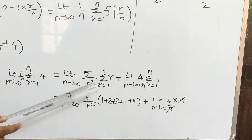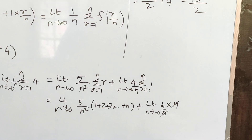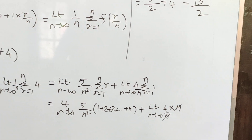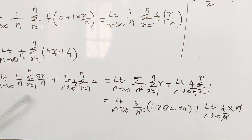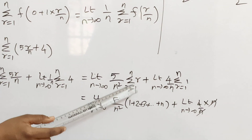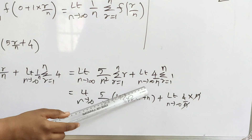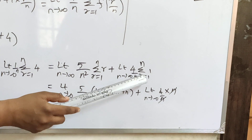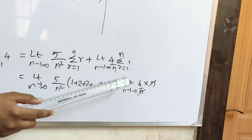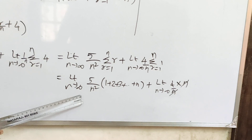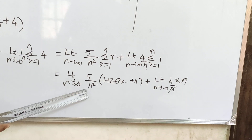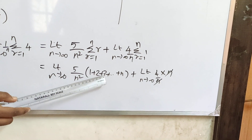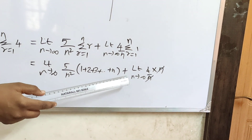Then limit n tends to infinity, taking 5 by n outside: 5 by n squared, summation r equal to 1 to n of r. Plus limit n tends to infinity, 4 by n, summation r equal to 1 to n of 1. Applying r = 1, 2, 3... the summation gives 1 plus 2 plus 3 plus ... up to n.